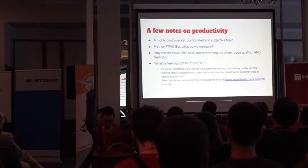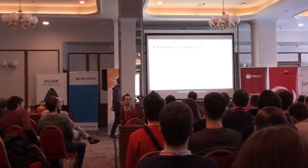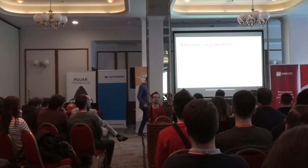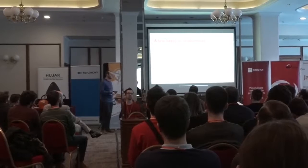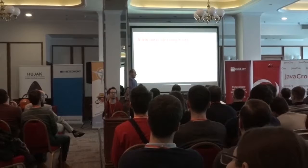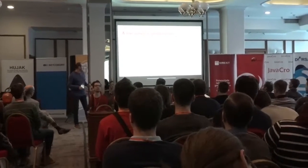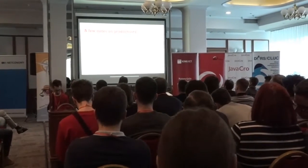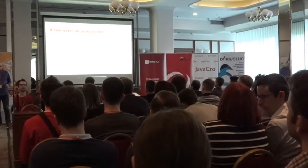So what can we do to improve our productivity and how can we measure whether we are productive or not? Well, we can include some metrics — metrics for the win. But what should we measure? Should we measure how fast someone is coding? How good are the tools he is using? How many story points are we delivering in some iteration? Or maybe we can start measuring DRYness, not reinventing the wheel, code quality, and feelings.